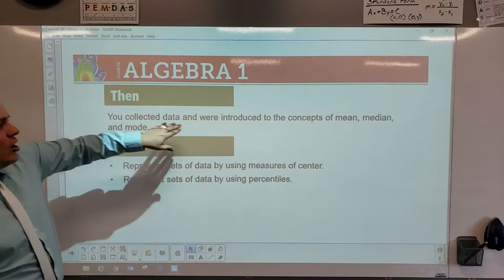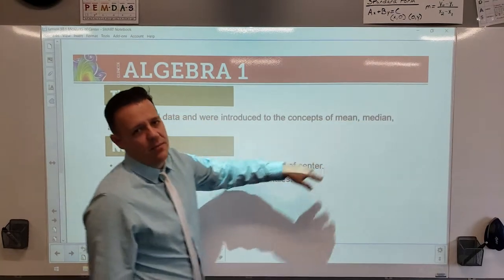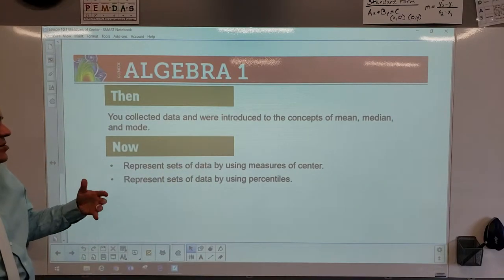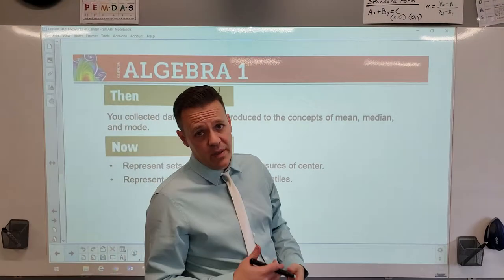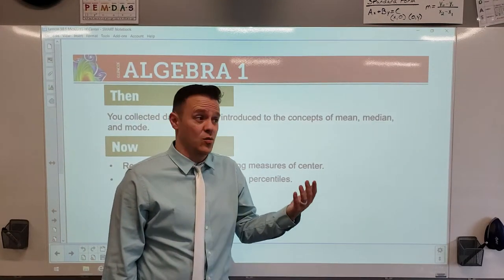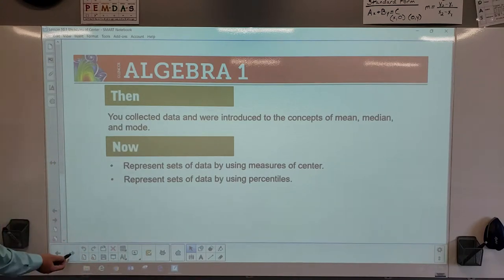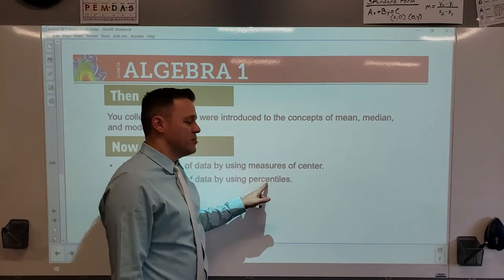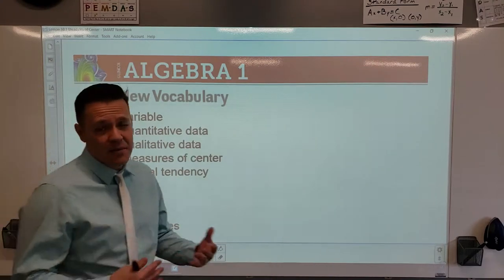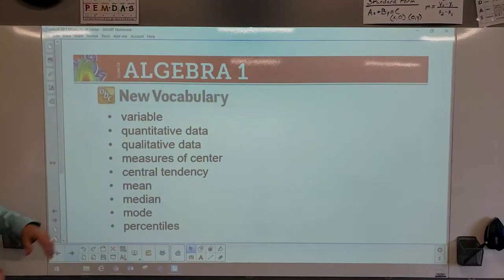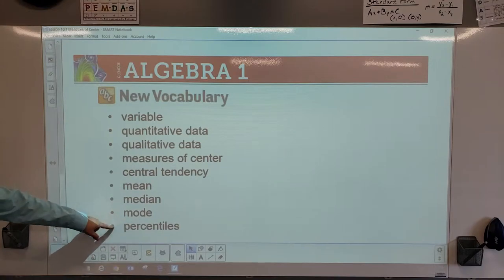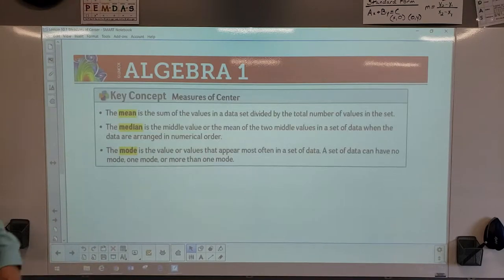We're going to do some modeling. You're all pretty familiar with mean, median, and mode. We're going to represent points of data using what are called measures of center, and then go into percentiles. Percentiles are very important — especially in finance, retail, or when you find out where you rank within your class, such as the top 25% or bottom 25%. Key vocabulary includes variable, quantitative data, and qualitative data. Measures of center cover mean, median, mode, and percentiles.